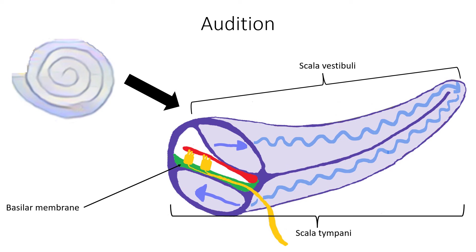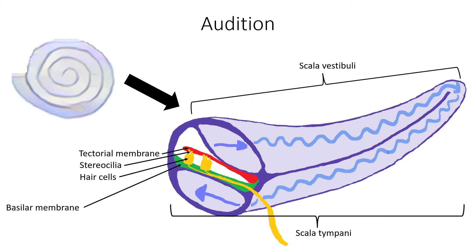Higher frequency waves move the area of the basilar membrane that is near the tip of the cochlea. Movement of the basilar membrane causes the tectorial membrane to slide across the stereocilia. This bends stereocilia either towards or away from the tallest member of each group. When the stereocilia bend towards the tallest member of each group, ion channels located in the hair cell membrane open up and cause the membrane to depolarize.